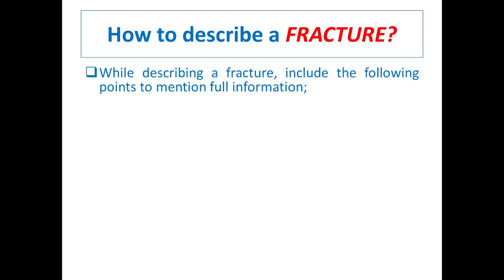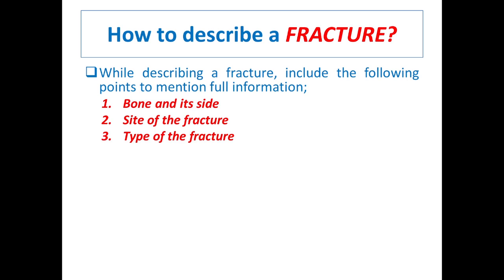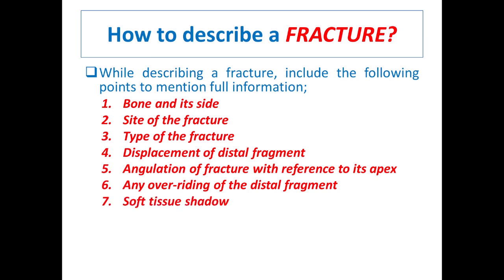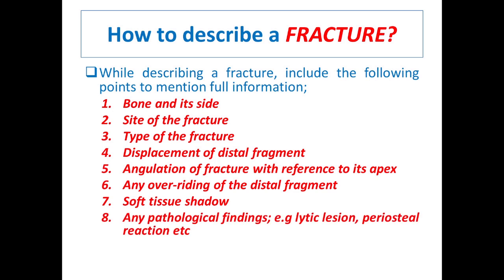When describing a fracture, it is very important to consider several points to provide full information. These are: first, the name of the bone with its size; second, the site of the fracture; third, the type of fracture — whether short or long oblique, or transverse; fourth, the displacement of the distal fragment; fifth, the angle of the fracture with reference to its apex; sixth, the overriding of the distal fragment; seventh, soft tissue shadow, especially in acute cases where there may be swelling due to inflammation.